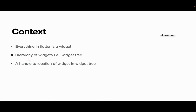Imagine there are 10 widgets on your screen and you want to handle a particular fifth widget — a button — and you want to tap on it and make a certain functionality happen in your application. Within the widget tree, you need to know the exact location of that particular button, which is what context gives you. So you are trying to get the context of that particular widget. Context is a BuildContext instance.